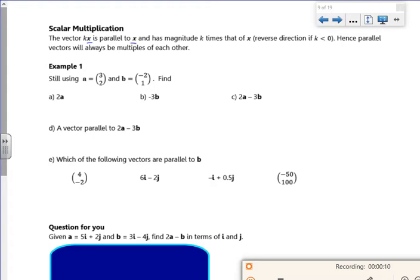That x should be in the boundary. And if it's negative, if k is negative, it goes the opposite direction. And just a reminder that parallel vectors will always be multiples of each other.